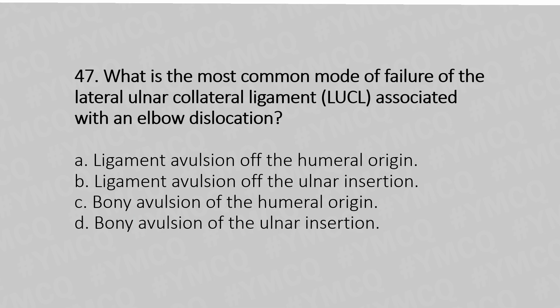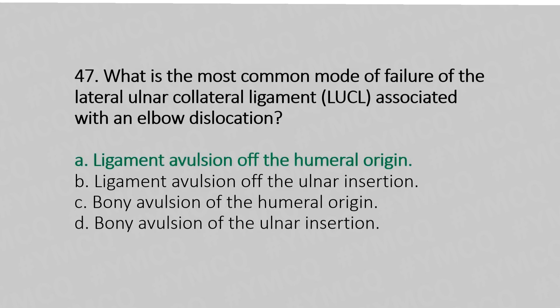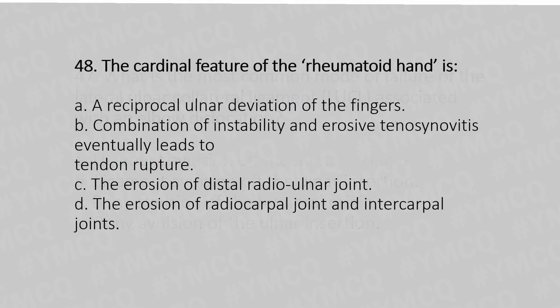Now let's move to question number 47. What is the most common mode of failure of the lateral ulnar collateral ligament associated with elbow dislocation? Option A, ligament avulsion of the humeral origin; option B, ligament avulsion of the ulnar insertion; option C, bony avulsion of the humeral origin; option D, bony avulsion of the ulnar insertion. The answer is option A: ligament avulsion of the humeral origin.